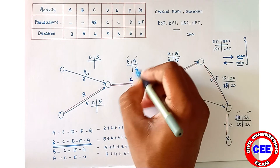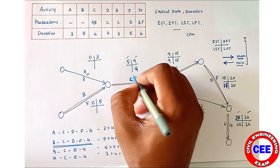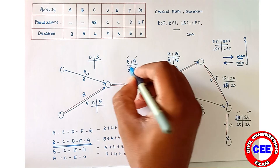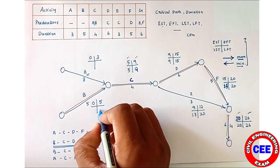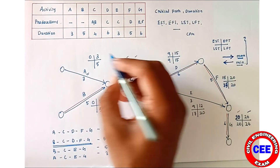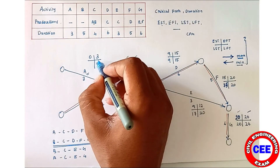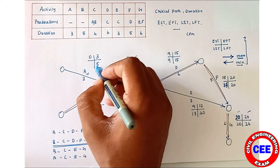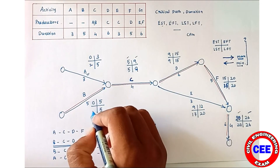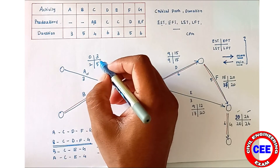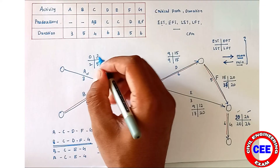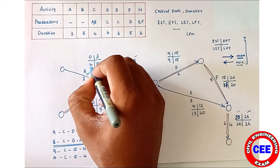So LFT of C = 9, and LST of C = 9 − 4 = 5. Then for A: LST = 5 − 3 = 2, and for B: LST = 5 − 5 = 0.